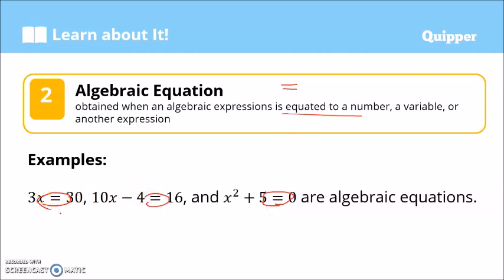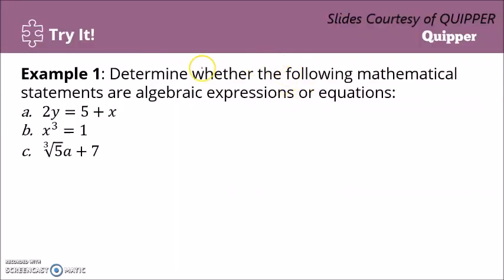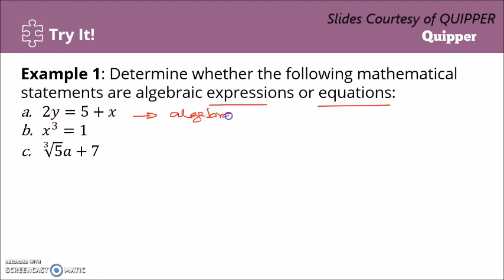The key distinction between an algebraic expression and an algebraic equation is the equal sign — an algebraic equation has an equal sign, while an expression does not. Example: determine whether the following mathematical statements are algebraic expressions or equations. For letter A, we have 2y equals 5 plus x. We have here an equal sign, so this is an algebraic equation.